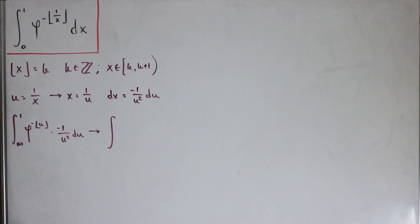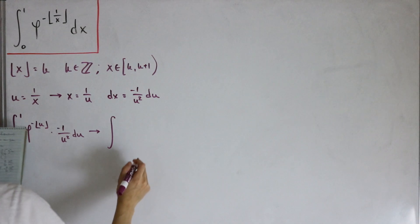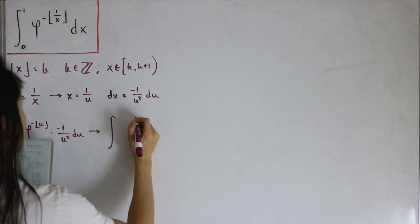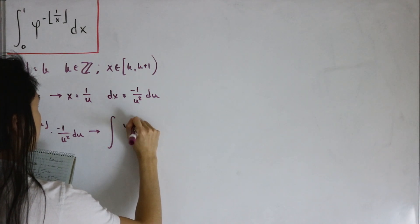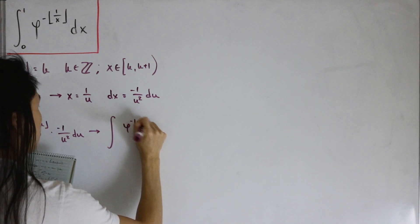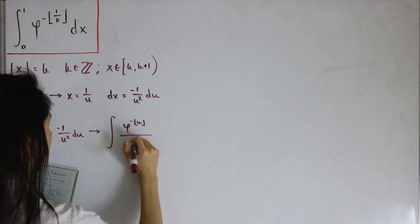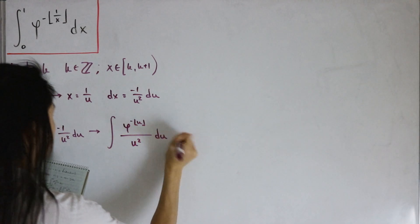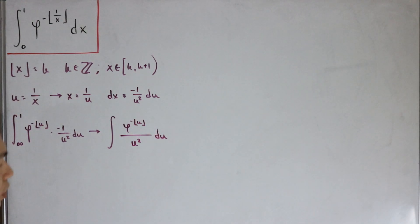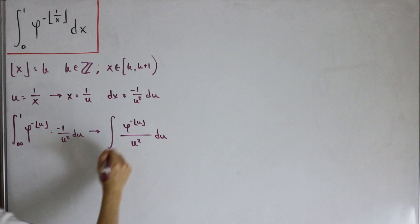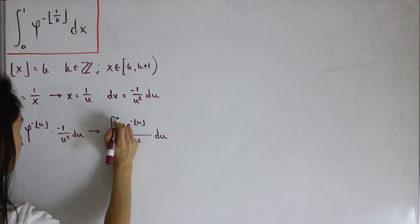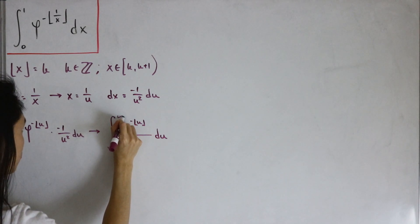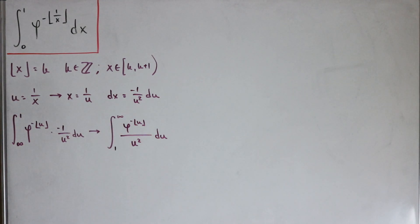Switching the bounds introduces a negative, but that negative cancels with the one from the differential, yielding φ^(-floor(u)) / u² du, integrated from 1 to positive infinity.